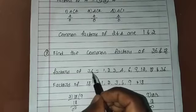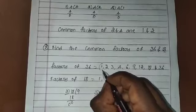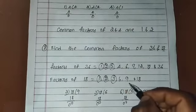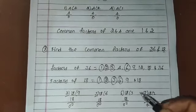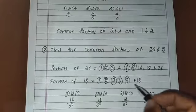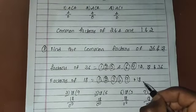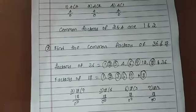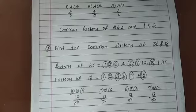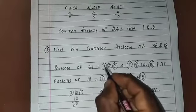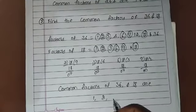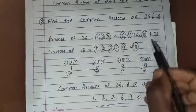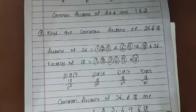Now we find the common factors of 36 and 18. Factors of 36 are 1, 2, 3, 4, 6, 9, 12, 18, 36 and factors of 18 are 1, 2, 3, 6, 9, 18. Comparing both: 1, 2, 3 are common; 4 is not in 18's factors; 6, 9, and 18 are common; 12 is not in 18's factors. So the common factors of 36 and 18 are 1, 2, 3, 6, 9, and 18.